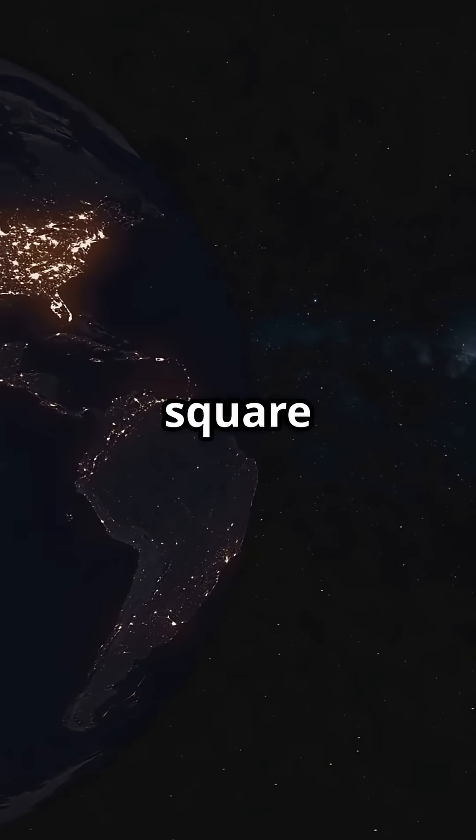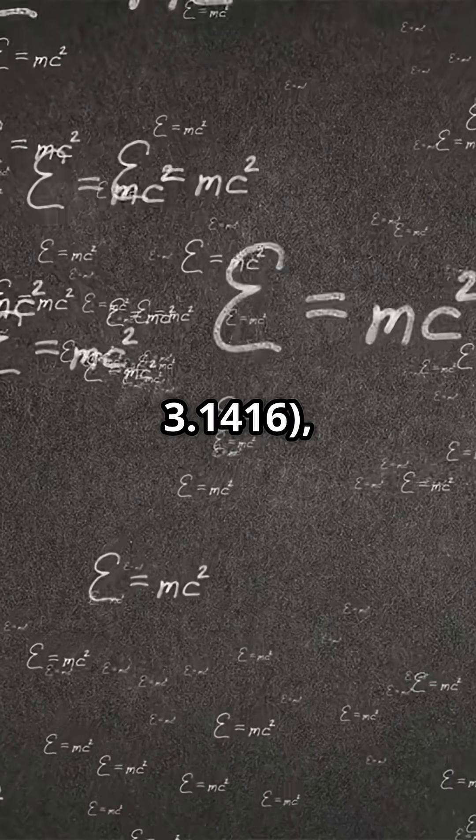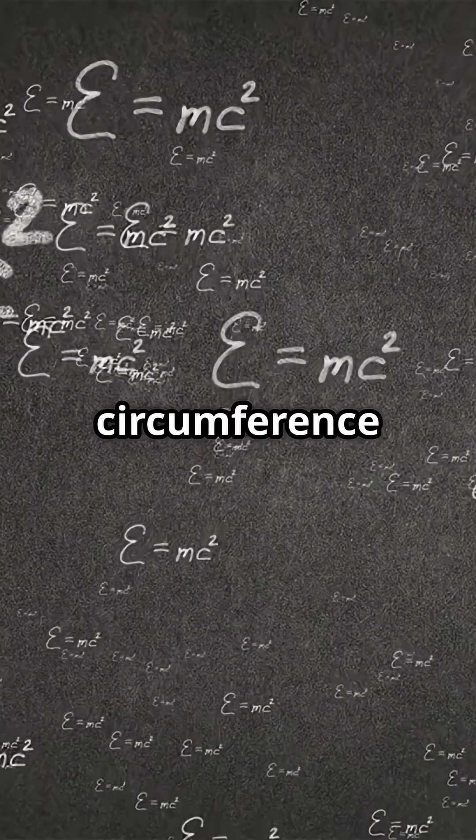i, the imaginary unit, the square root of negative 1, essential in complex numbers. Pi, the famous pi, 3.1416, the ratio of a circle's circumference to its diameter.